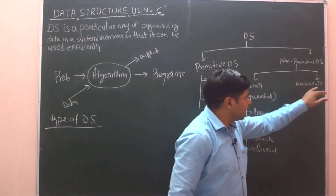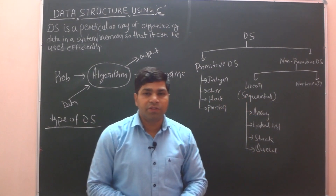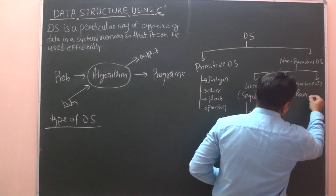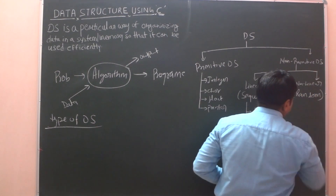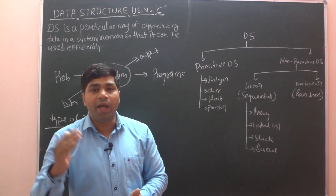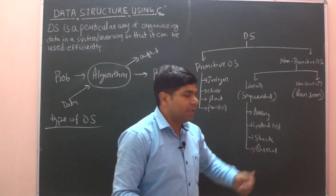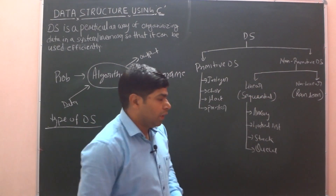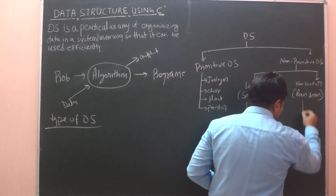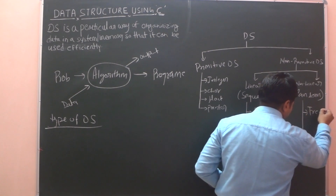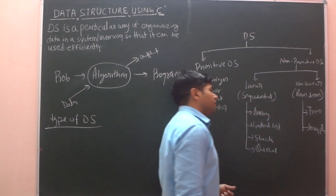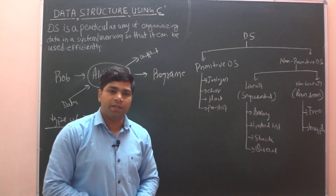What is non-linear data structure? All data arranged in random manner. Random means one element connected to n number of elements — that is called non-linear data structure. Which data structures are non-linear? Tree and graph — these are called non-linear data structures.